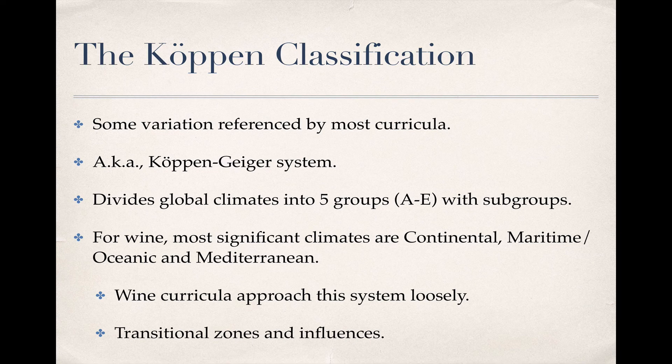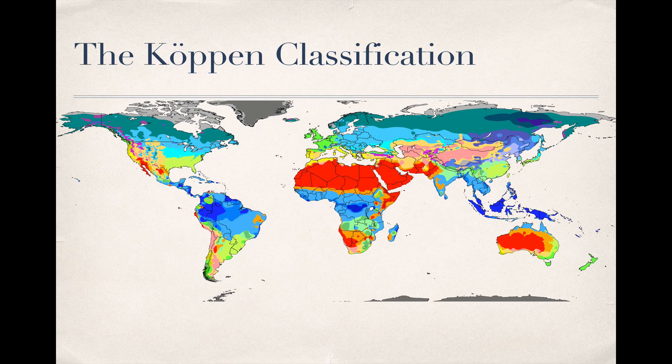The system has undergone some refinements since then, both by Köppen himself and by others, most notably the German climate researcher Rudolf Geiger, so you'll also hear it called the Köppen-Geiger system. The scheme divides global climates into five groups, ranging from tropical to polar climates, identified by the letters A through E, and then divides them further into a little more than two dozen subcategories. As you can see from this map, all of this classification and subclassification makes for a pretty dazzling array of climate areas around the globe.